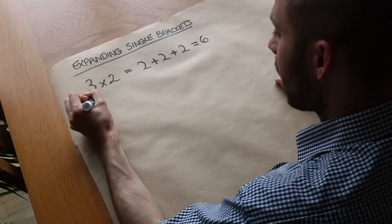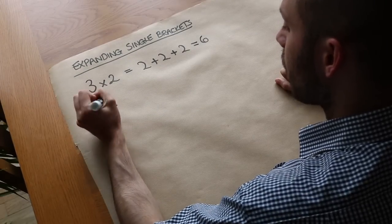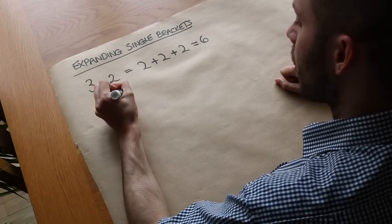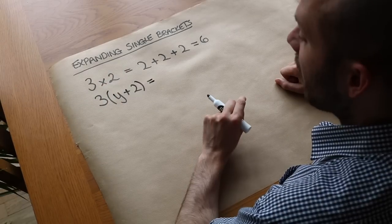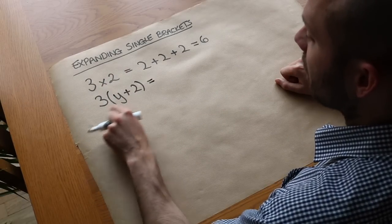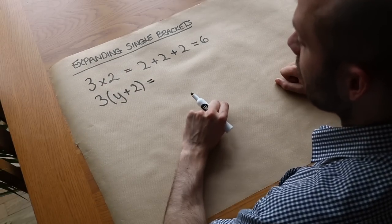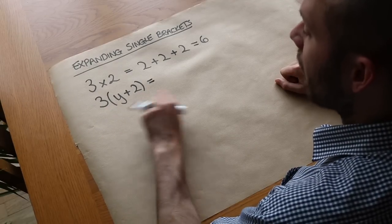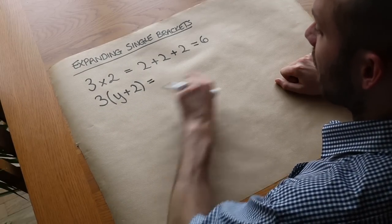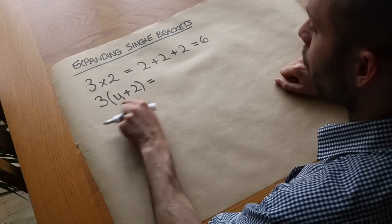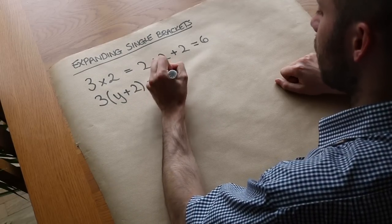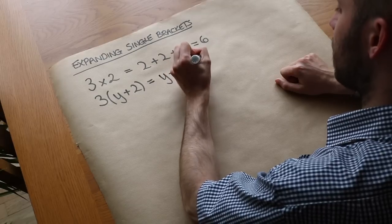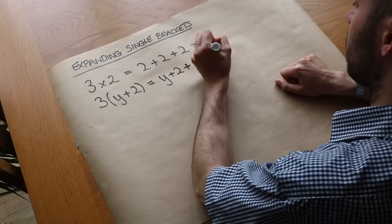Now let's say instead I had 3 lots of y plus 2. In algebra whenever you have two things next to each other that means you're timesing them together so we've got 3 times all of y plus 2. If we did it in the same way we've got 3 lots of y plus 2, y plus 2 plus another lot of y plus 2, plus another lot of y plus 2.